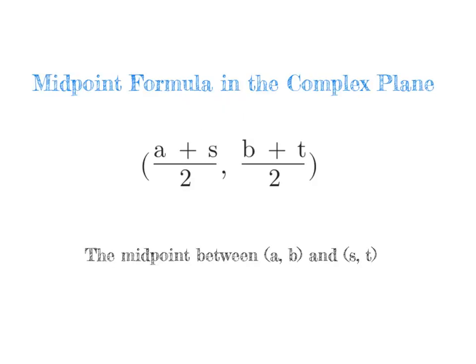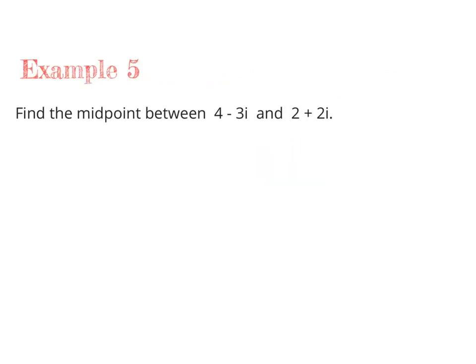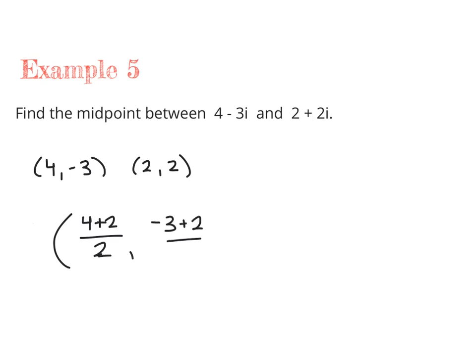It may not come as a surprise that using the midpoint formula in a complex plane is exactly the same as using it in a regular xy-axis. You can find the midpoint between two complex numbers by adding up the real values and dividing by 2, and then adding up the imaginary values and dividing by 2. Let's find the midpoint between 4 minus 3i and 2 plus 2i. Written as coordinates: (4, -3) and (2, 2). Using our formula: (4 plus 2) over 2, and (negative 3 plus 2) over 2, gives us the midpoint (3, -1/2).